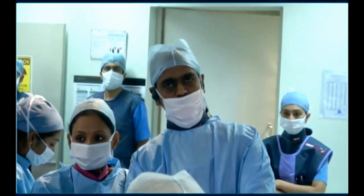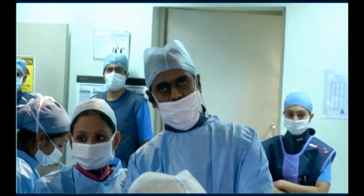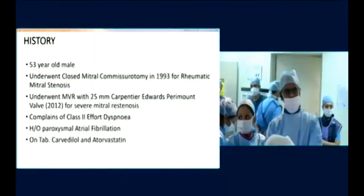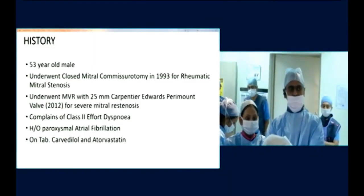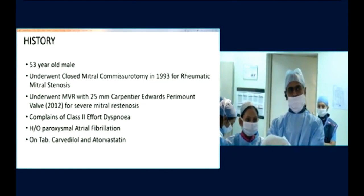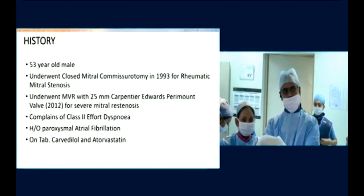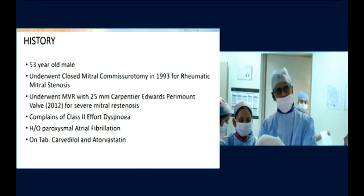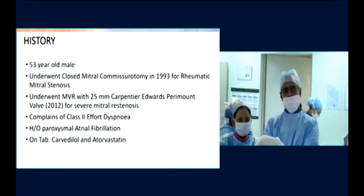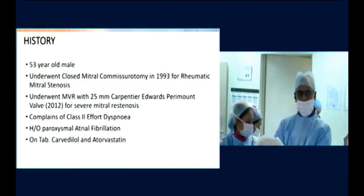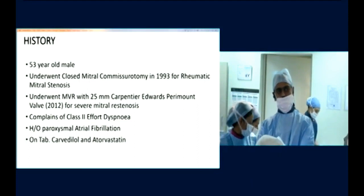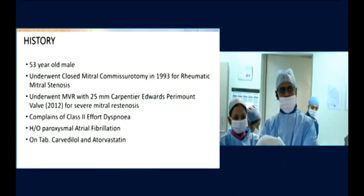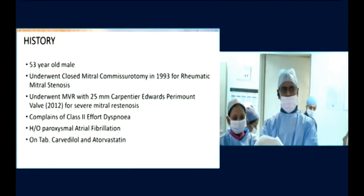Let me show you a brief PowerPoint presentation of this patient — a 53-year-old gentleman who got a closed mitral commissurotomy for rheumatic mitral stenosis in 1993, which re-stenosed. He then got a mitral valve replacement with a 25mm bioprosthetic valve and continues to have class 2 dyspnea. He has a history of paroxysmal atrial fibrillation.